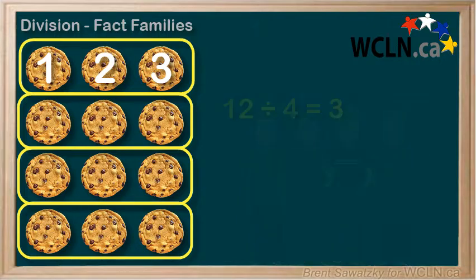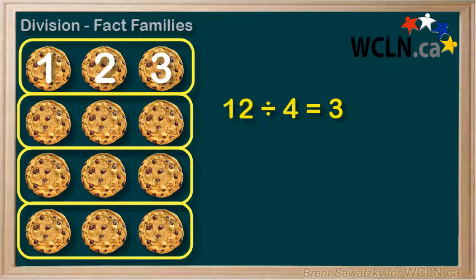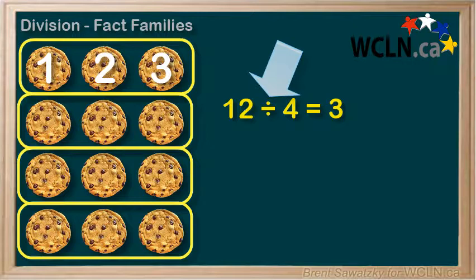12 cookies divided by 4 friends equals 3 cookies each. And we can state it like this. This is our divide symbol. We'd say 12 divided by 4 equals 3.